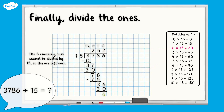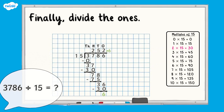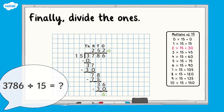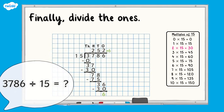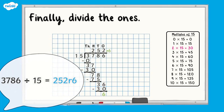We write the remainder with a lowercase r after the whole number answer. 3,786 divided by 15 equals 252 remainder 6.